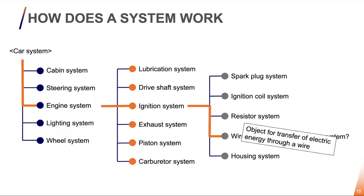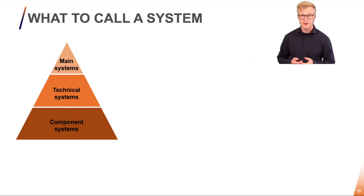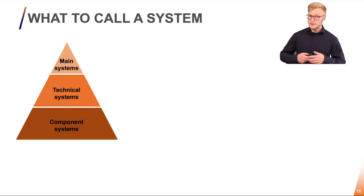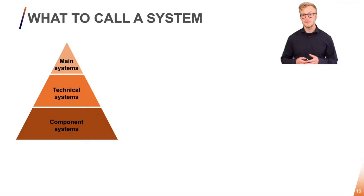So we now need a classification system to control the names. The big question is how do we handle these definitions? Well, 81346 luckily has already provided an answer. The standard has defined three main types of systems: main systems, technical systems, and component systems. And they have structured these definitions quite cleverly in a class library.